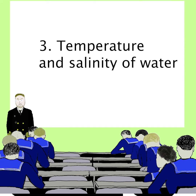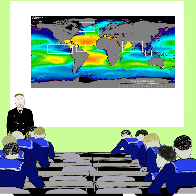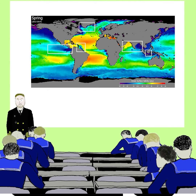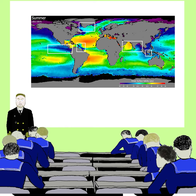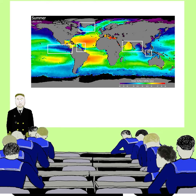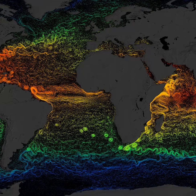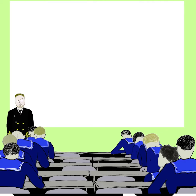3. Temperature and salinity. Differences in water temperature and salinity affect water density, creating gradients that drive water movement. Colder, saltier water is denser and tends to sink, while warmer, less salty water rises. This process contributes to the global conveyor belt, a complex system of deep and surface currents circulating worldwide.